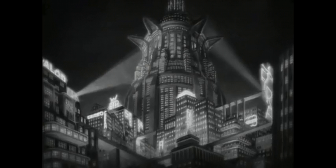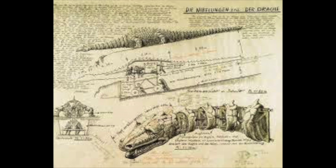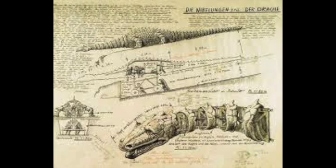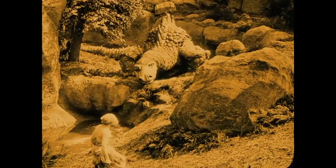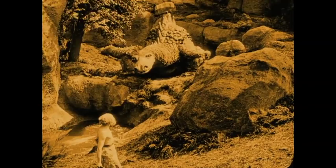Die Nibelungen was one of the most elaborate works in the silent film era, known for its innovative dragon and its charming and dominant set. The 50-foot dragon present in the film was a slow-moving mechanical creature that required 17 people to operate. This was one of the captivating elements which drew his audiences in.